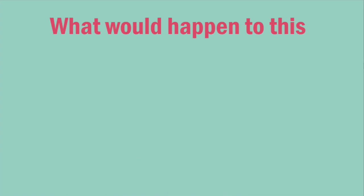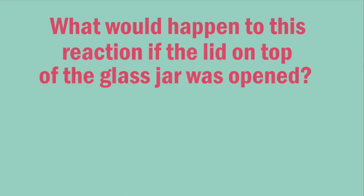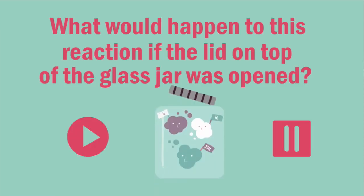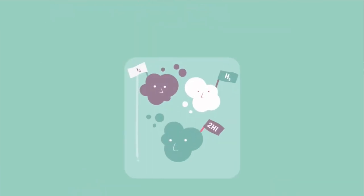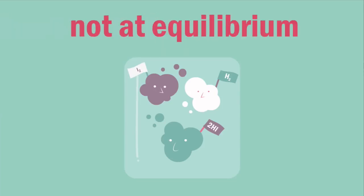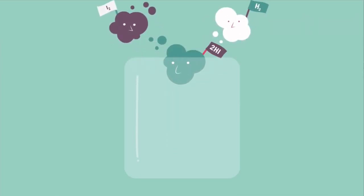What would happen to this reaction if the lid on top of the glass jar was opened? Please pause the lesson to think about this, and resume when you are done. If the lid was removed, the system is no longer at equilibrium, as the reactants and products, or matter, would be able to escape the system.